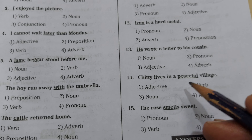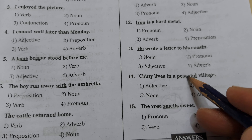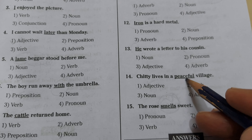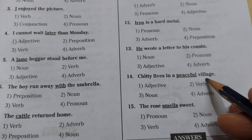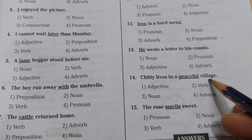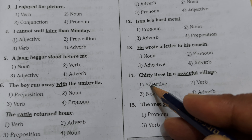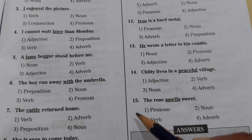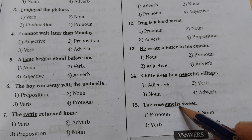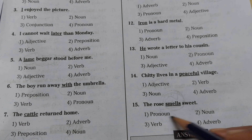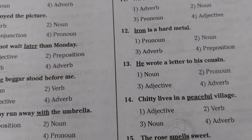'Chitti lives in a peaceful village' — 'peaceful' is underlined. What kind of village? Peaceful village — describing word, adjective. The word which comes before a noun is adjective — village is noun, peaceful comes before it, so peaceful is adjective. 'The rose smells sweet' — 'smells' is underlined. Taste, smell — these are verbs. So smells is a verb.